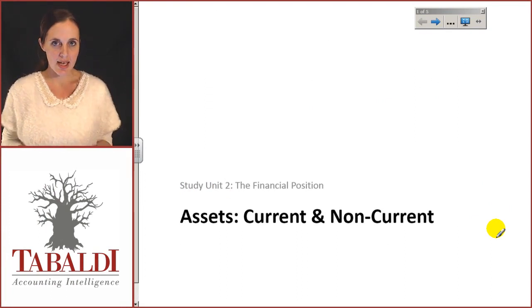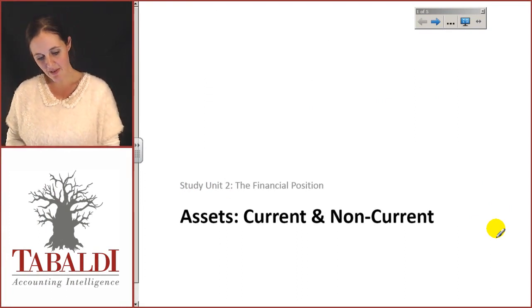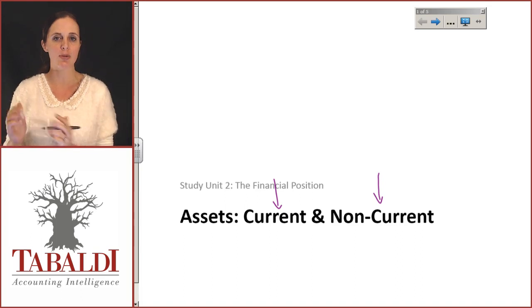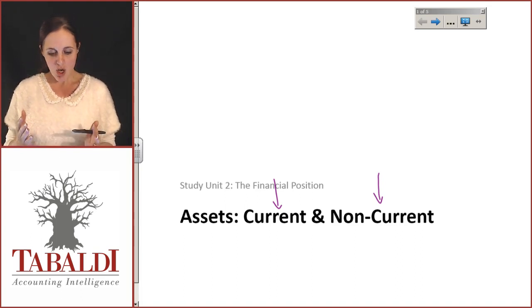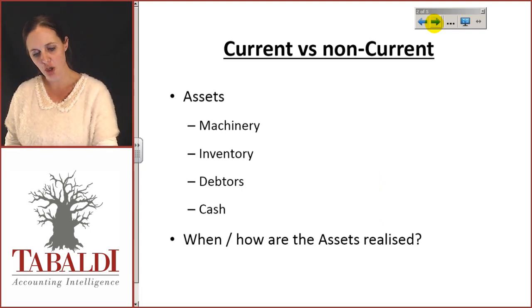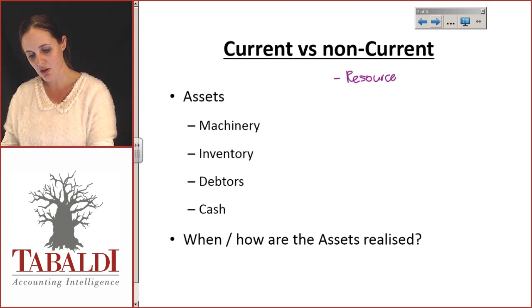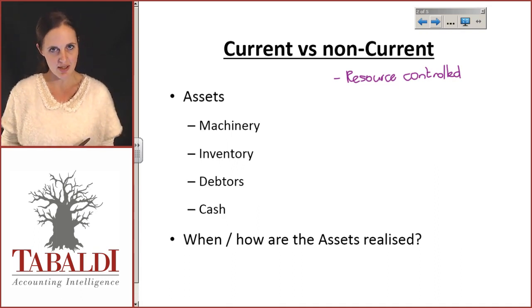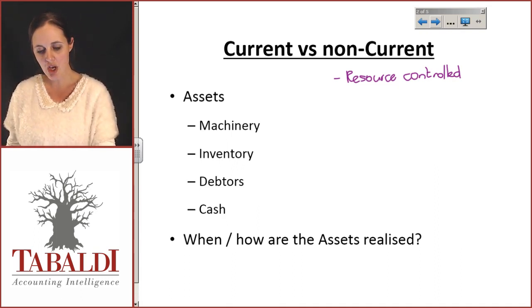When we take a look at assets and liabilities, we need to be aware of the fact that we split them in the statement of financial position between current and non-current. We need to know what makes an asset current and what makes an asset non-current. We know the definition of an asset — it's a resource controlled by the entity. Remember, just because your entity doesn't own something outright doesn't necessarily mean that they don't control it.